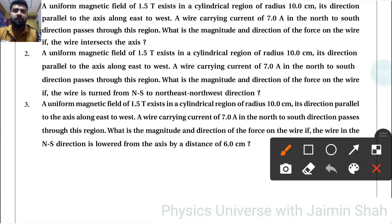A uniform magnetic field B equals 1.5 tesla exists in a cylindrical region of radius R equals 0.1 meter, its direction parallel to the axis along east to west.